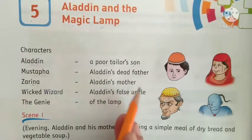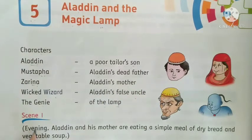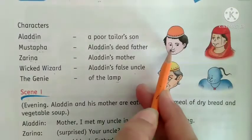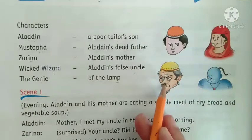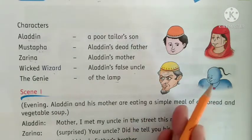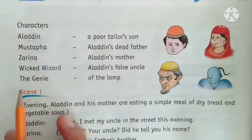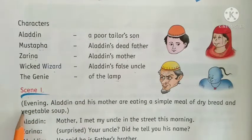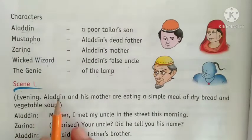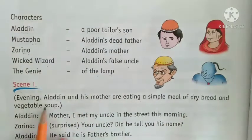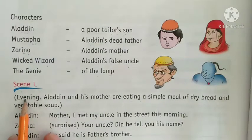Students, this is a play, so it is scene-wise. Scene 1. This is Aladdin, this is his mother Zarina, this is the wicked wizard who came as his false uncle, and this is the Genie. Now pay attention in your textbook. Scene 1. Evening — Aladdin and his mother are eating a simple meal of dry bread and vegetable soup.